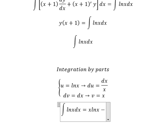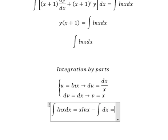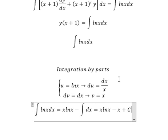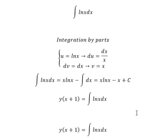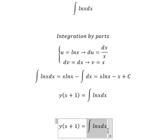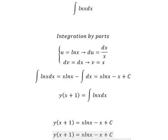Minus du multiplied by v: that's (s/s) ds, which simplifies to ds. So this gives us s, and we add the constant C. We substitute this back in, and then divide both sides by (s+1) to solve for y.